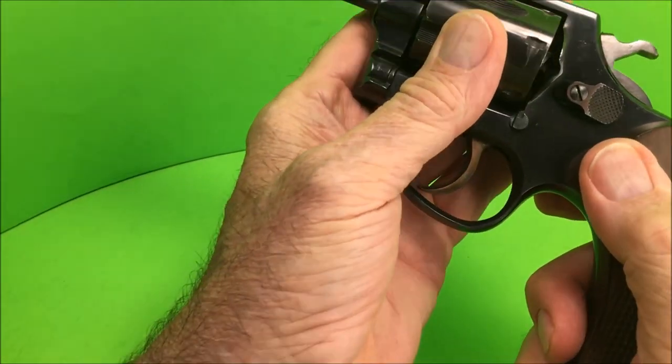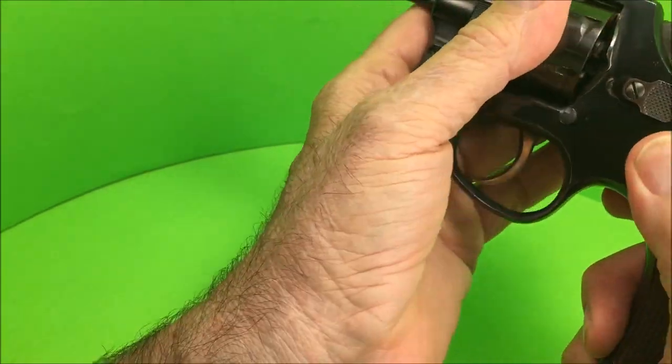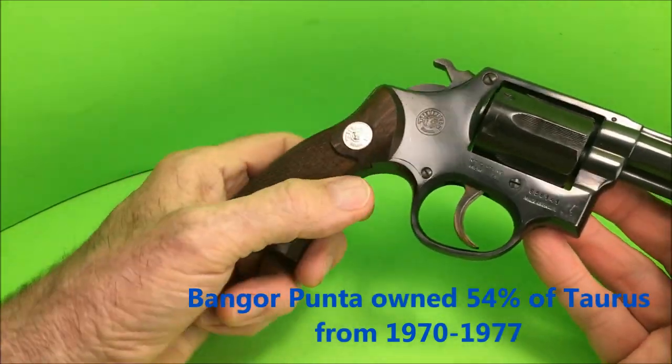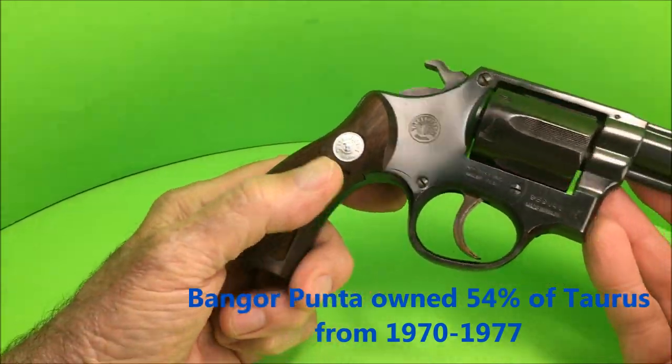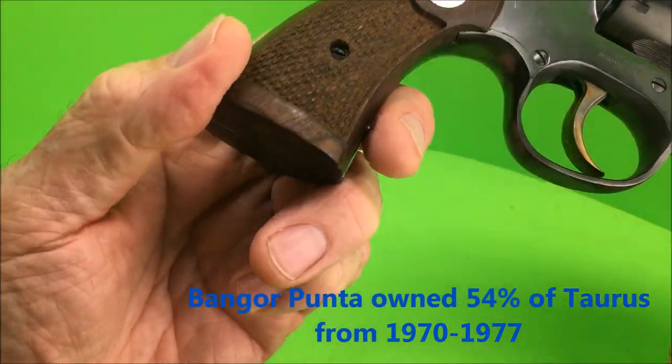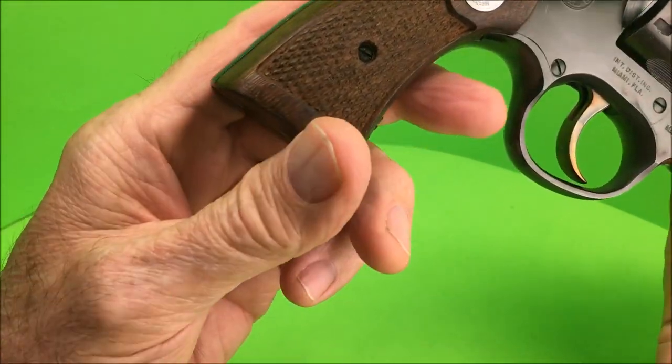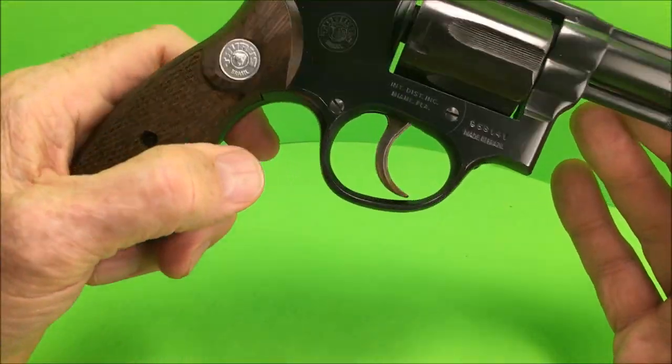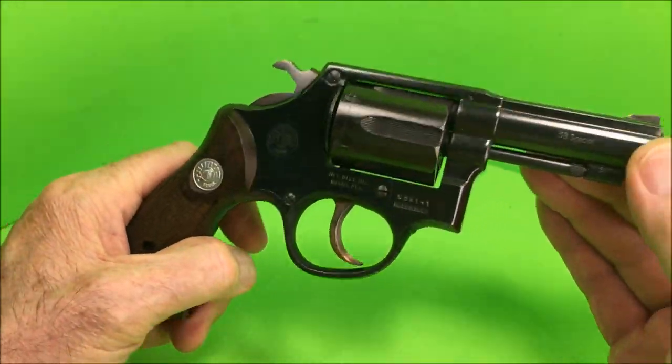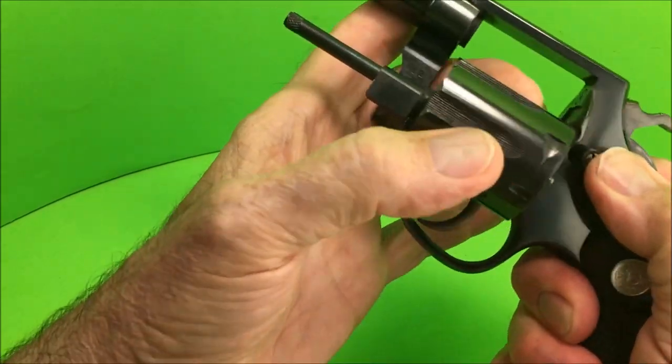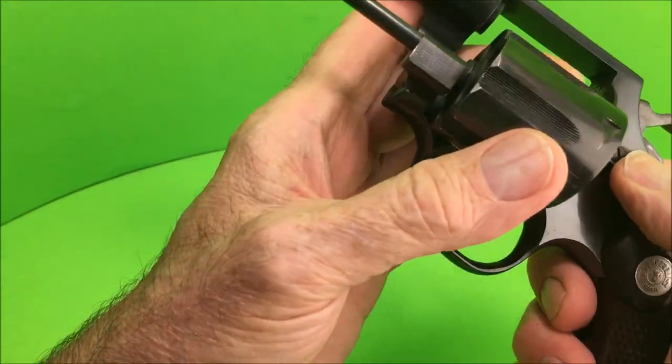At one time Taurus and Smith & Wesson were both owned by the same parent company Punta Bangor, and then eventually Taurus went their separate way. Taurus made a fine revolver back then, very similar to the Smith & Wesson. The internals are different but from the outside they're almost identical.